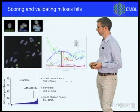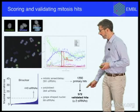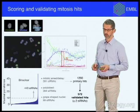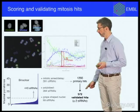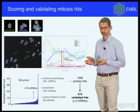We then validate whether these hits are reproducible by having at least a second siRNA that gives the same phenotype, coming to a set of about 572 validated genes that reproducibly — with two independent reagents — perturb mitosis. That's the set of close to 600 genes, rather than 23,000, that we should work on if we are interested in cell division.